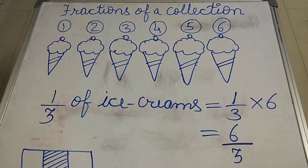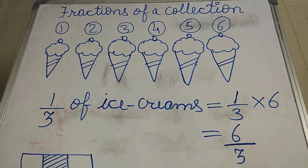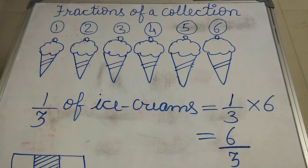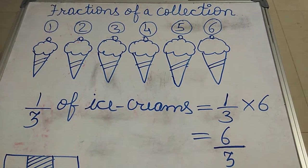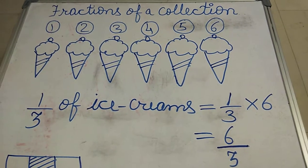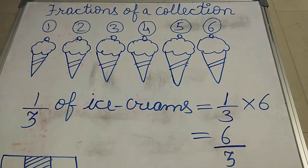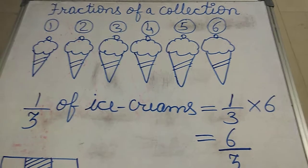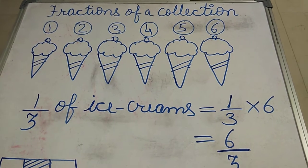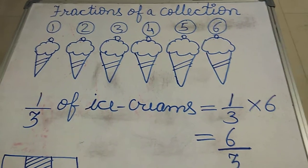Good morning students, today we will understand the concept of fractions of a collection. Collection means together, the collection of anything like marbles, chocolates, biscuits, anything. So here I'm taking the example of ice creams. Suppose if I'm having six ice creams and my best friend is about to come to my home.